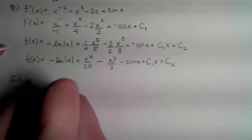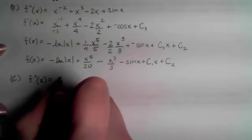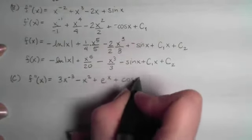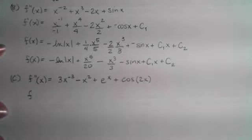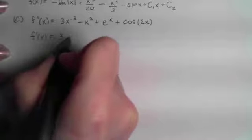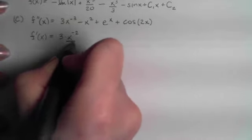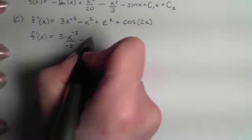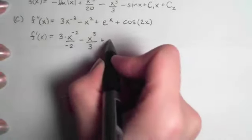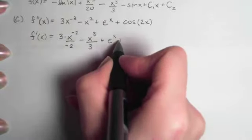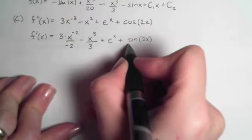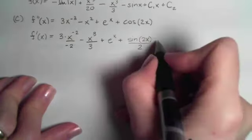Last one, part C. Again, I'll rewrite everything as powers of x first, then do antiderivatives. The antiderivative of f double prime is f prime. Moving through each term: apply the power rule backwards, add 1, divide by the new power. What did I take the derivative of that gave me e to the x? That's just e to the x. What gave me a cosine? That's the sine of the inside unchanged, divided by the derivative of the inside. Then add c sub 1.